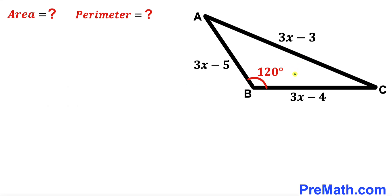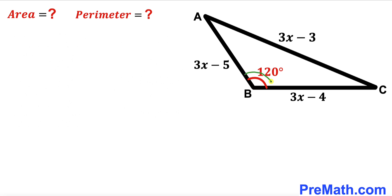Welcome to pre-math. In this video we have triangle ABC where side length AB is represented by 3x minus 5, side length BC is represented by 3x minus 4, and side AC is 3x minus 3. Moreover, angle ABC is 120 degrees. Our task is to calculate both the area and the perimeter of this triangle ABC.